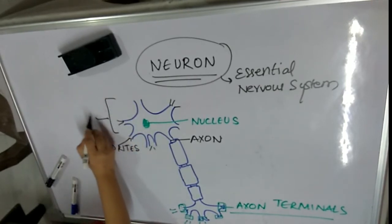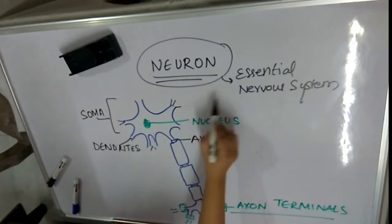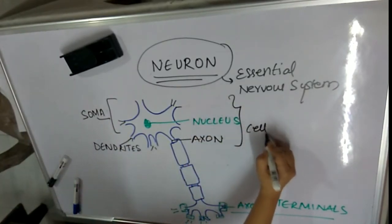This is the soma or body of the neuron, which you can also call the cell body of the neuron.